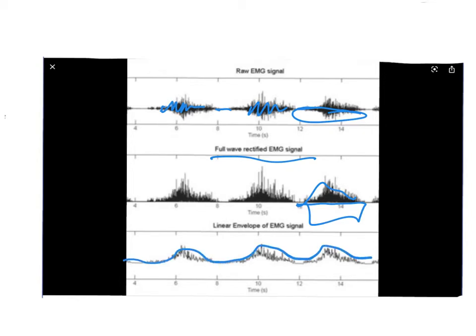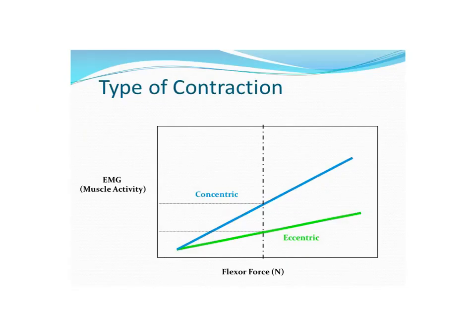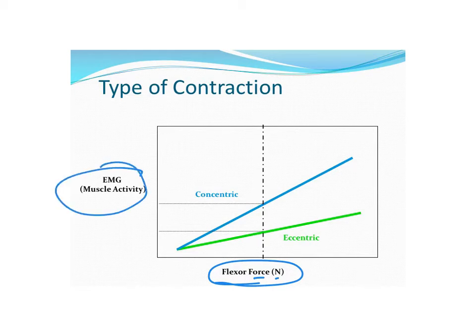Alright, so let's look at the type of contraction. We talked about EMG representing muscle activation, but muscles can be used concentrically, eccentrically, or even isometrically. On this graph we have flexor force, so force in newtons on the x-axis, and EMG or muscle activity on the y-axis. And then we have this relationship between these two variables in blue for concentric contractions and in green for eccentric contractions.